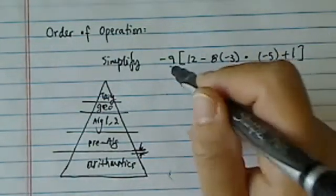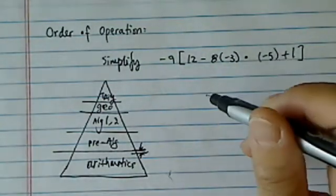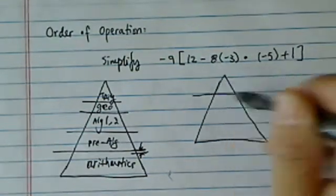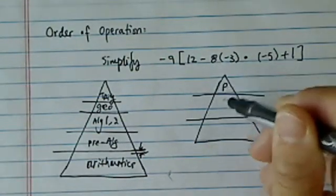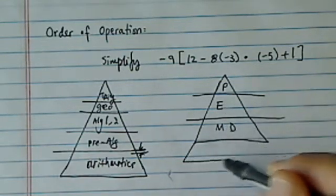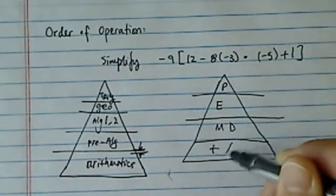Now, in order to figure this one out, we need another pyramid, a little triangle. This one is fun. And then: please, excuse, multiply, divide, add, and subtract.